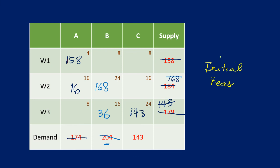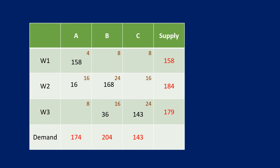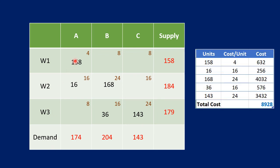We will now go to the stepping stone method to see whether this solution is optimal. Let us first compute the total cost for our initial feasible solution. The costs are: 158 × 4, 16 × 16, 168 × 24, 36 × 16, and 143 × 24. The total cost for our initial feasible solution is 8,928.